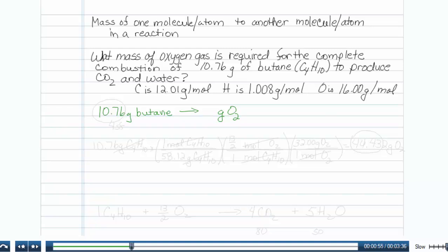Now let's write down what we're given, 10.76 grams of butane. I'm going to write the chemical formula to be shorter, C4H10.